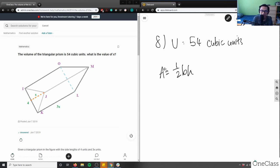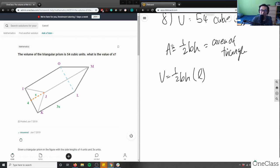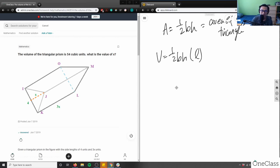So if area equals half times base times height is my area of a triangle, to find the volume I would have half times base times height times the length. I would need to multiply some sort of length to get me that extra dimension. So this would be my equation here.